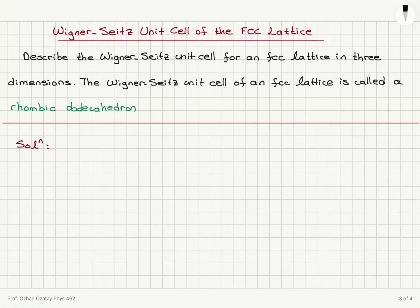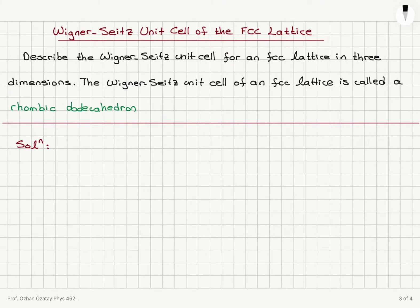Wigner-Seitz unit cell of the FCC lattice. Describe the Wigner-Seitz unit cell for an FCC lattice, that is a face-centered cubic lattice, in three dimensions. The Wigner-Seitz unit cell of an FCC lattice is called a rhombic dodecahedron.